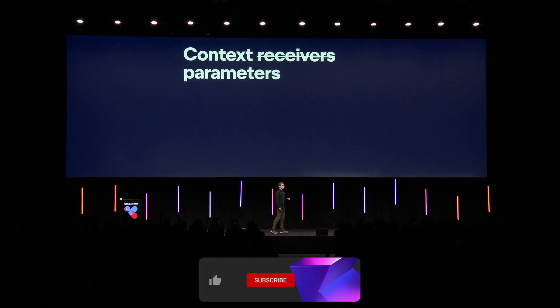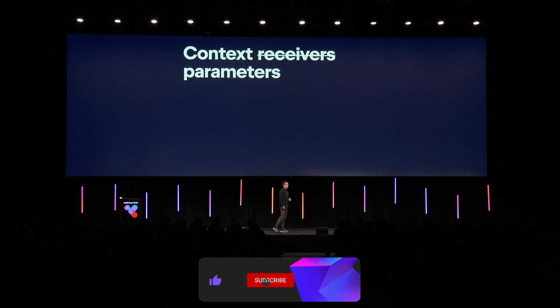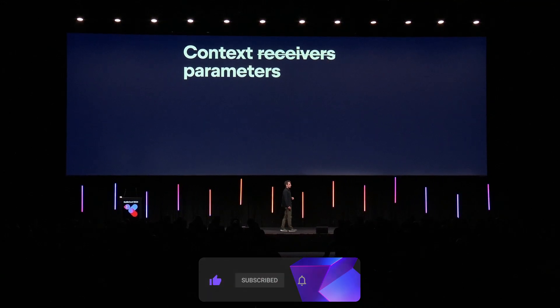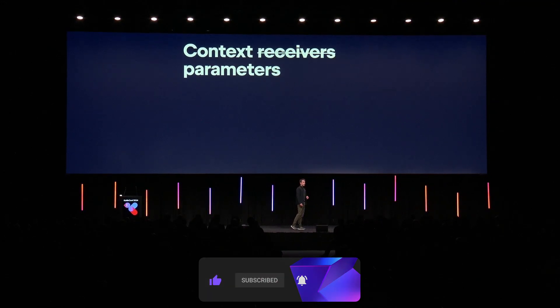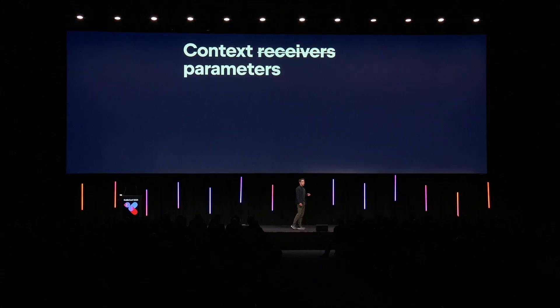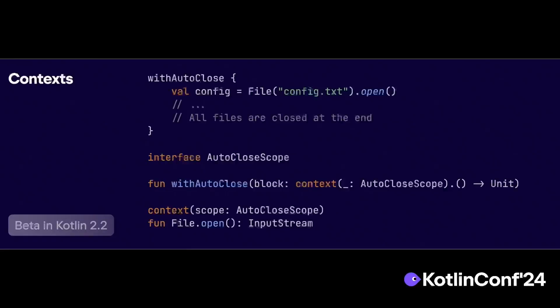Now let's take a look at the feature that has naturally evolved in Kotlin over the past few years. The update is about context parameters, or context receivers, which you've probably heard of. The feature was already released as experimental and became quite popular. So we are addressing your feedback and moving it to beta in Kotlin 2.2.